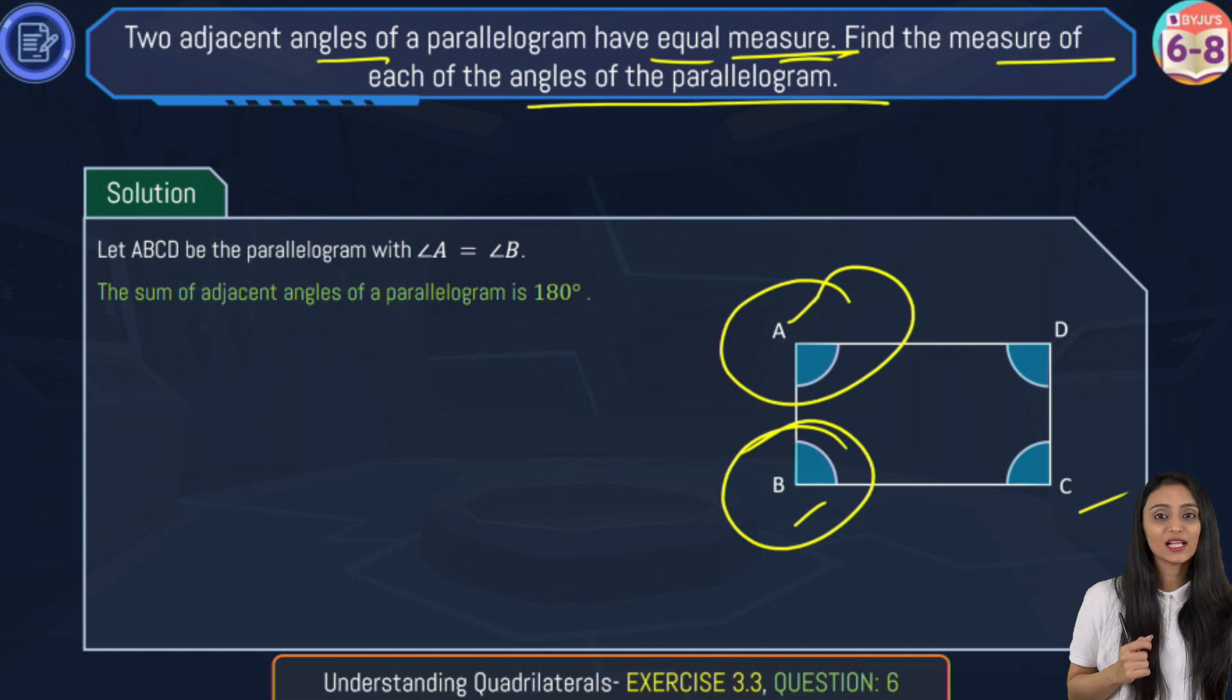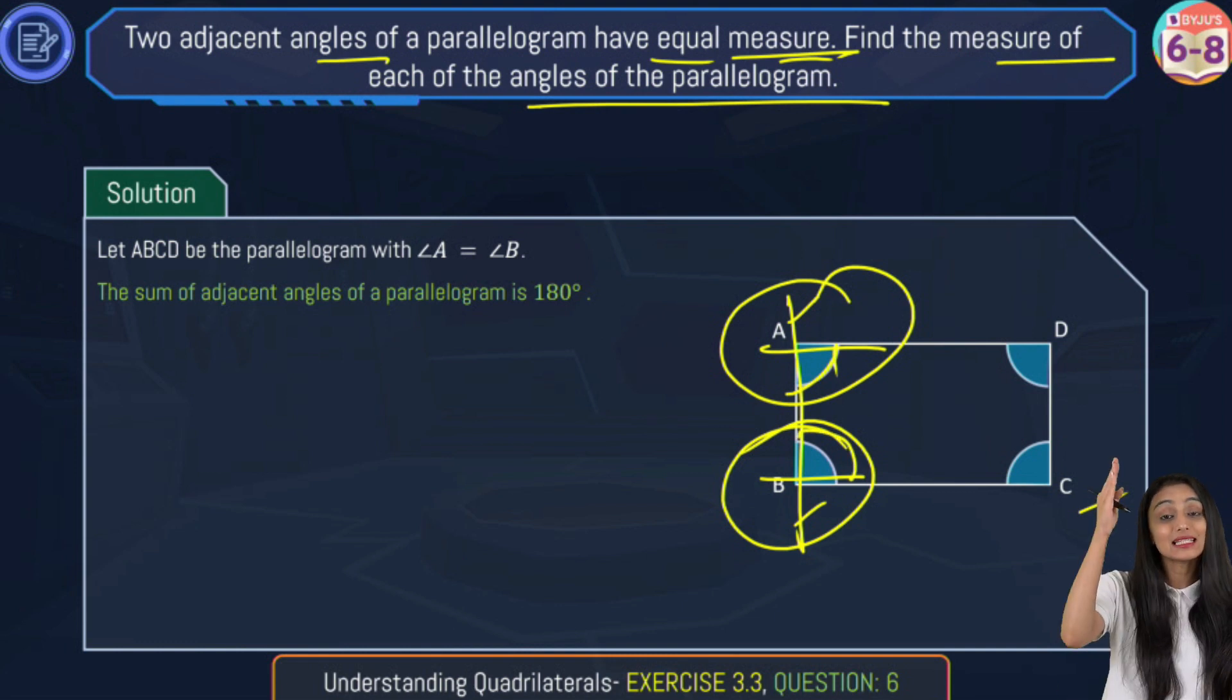So the sum of adjacent angles of a parallelogram, we know that that's 180 degrees. Reason being these are the two parallel lines. So these two angles, they are intersected by a transversal, so their sum is going to be 180 degrees.